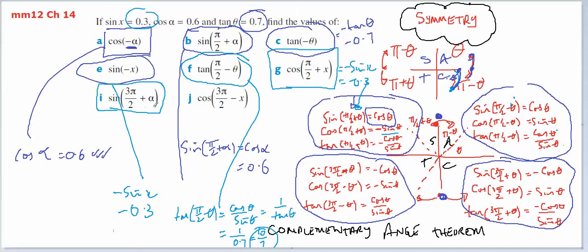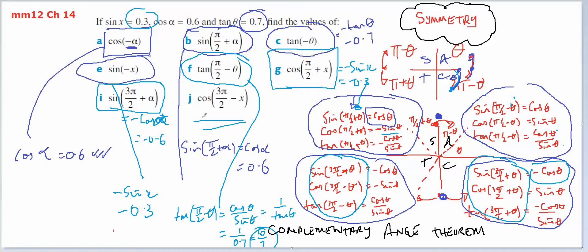Sine of 3π/2 plus alpha: 3π/2 plus alpha is the fourth quadrant, so the sine is going to equal negative cos of alpha. Cos of alpha is 0.6, therefore negative 0.6. And lastly, cos of 3π/2 minus x: 3π/2 minus x is the third quadrant. Cos is going to equal negative sine, so it's going to equal negative sine of x. Sine of x is 0.3, so negative 0.3 is going to be the answer.